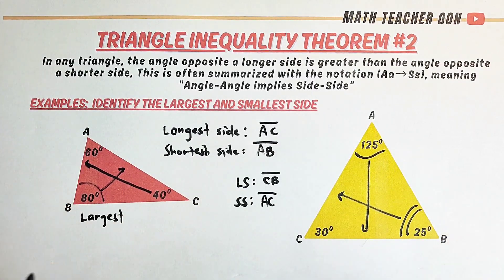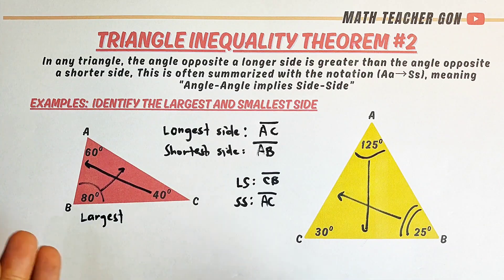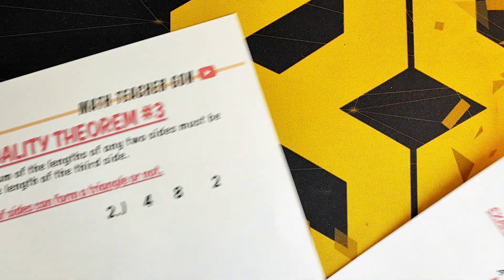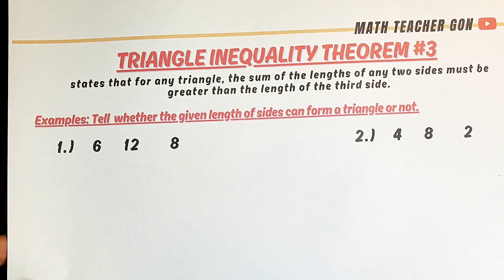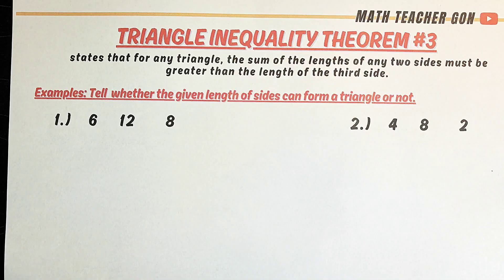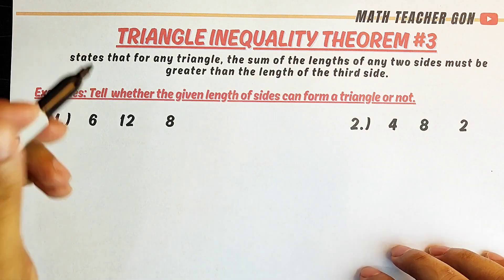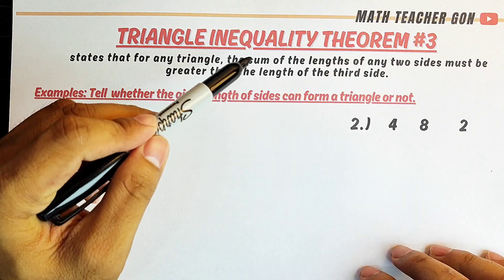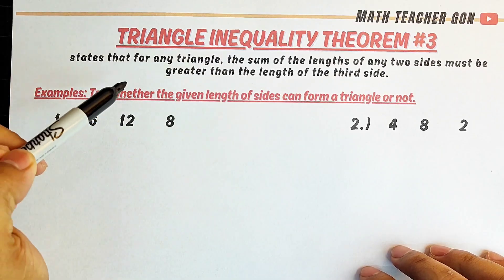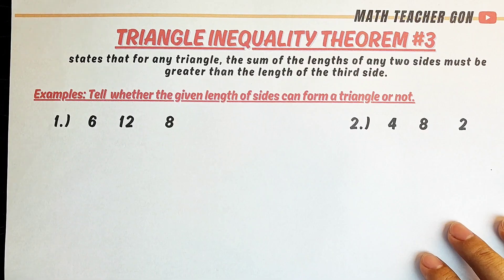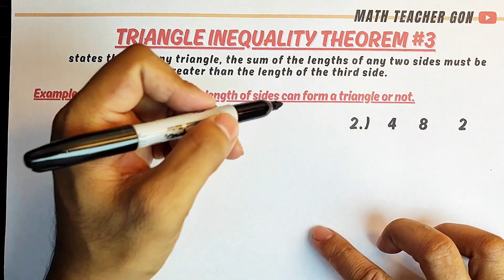That's it for Theorem Number Two. Now let's proceed with Theorem Number Three. It states that for any triangle, the sum of the lengths of any two sides must be greater than the length of the third side.